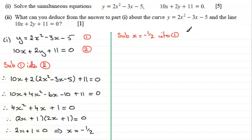And if we do that, we therefore have that y is going to equal 2 times x squared, x being minus a half. So it's minus a half all squared. Minus 3 times x, 3 times minus a half. And then finally, minus 5.